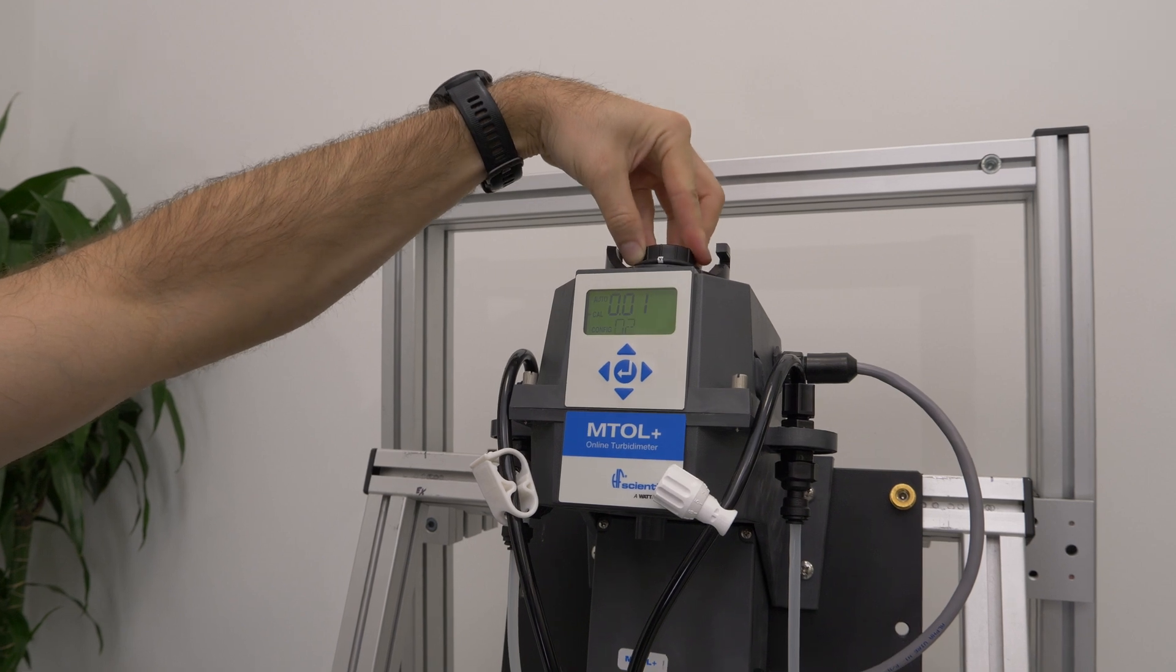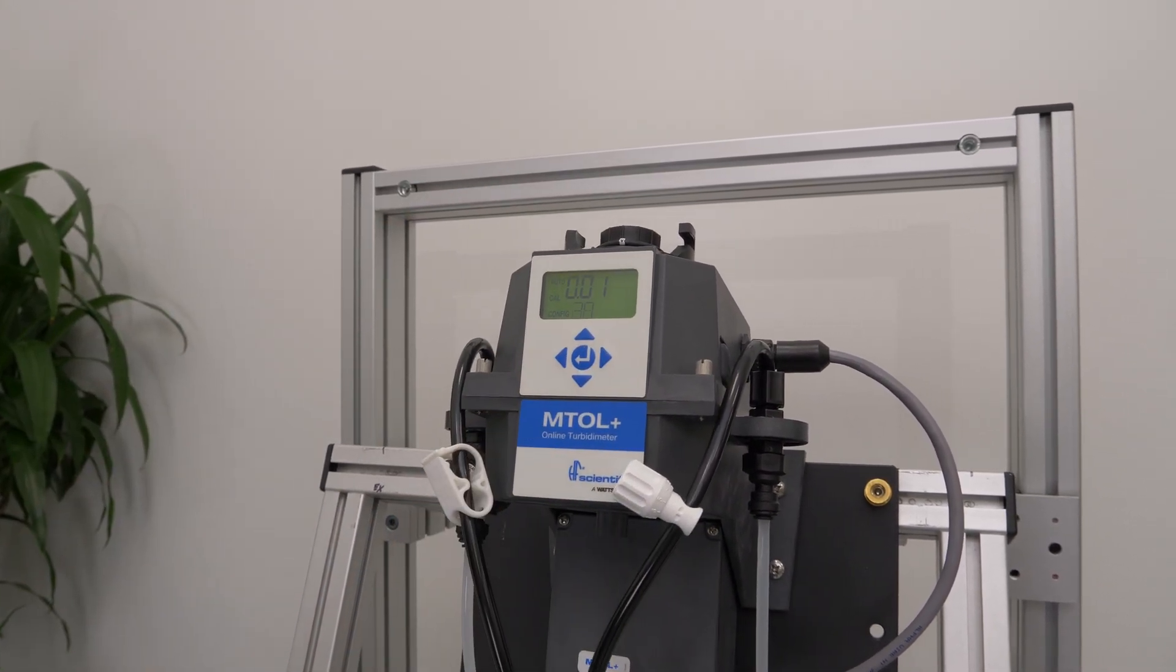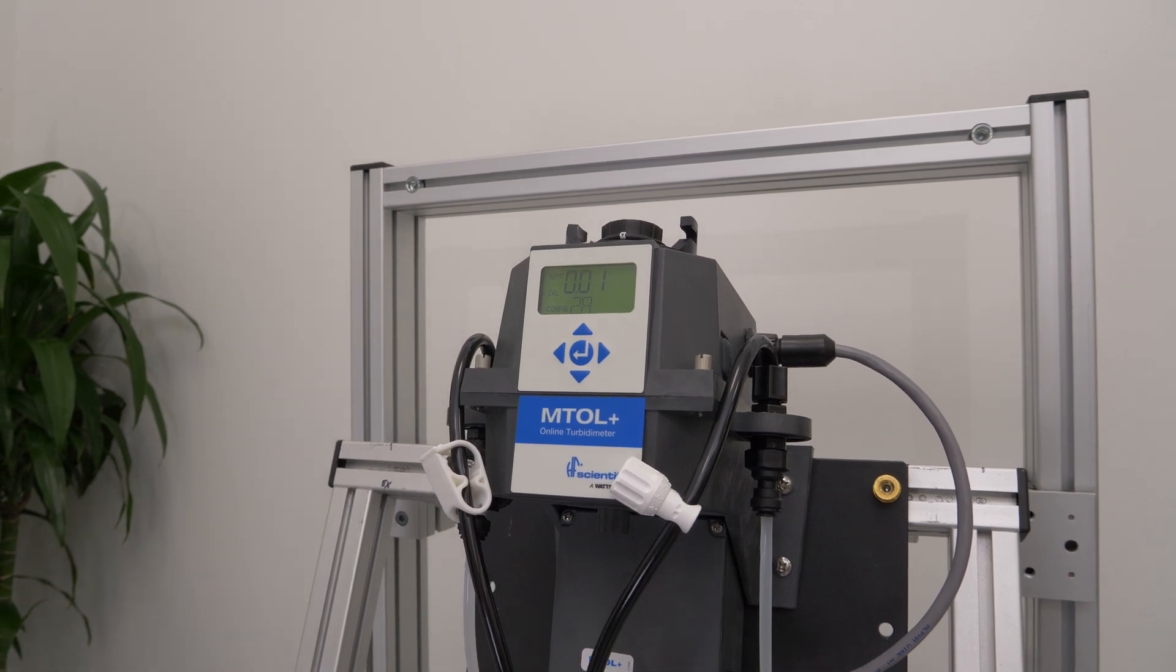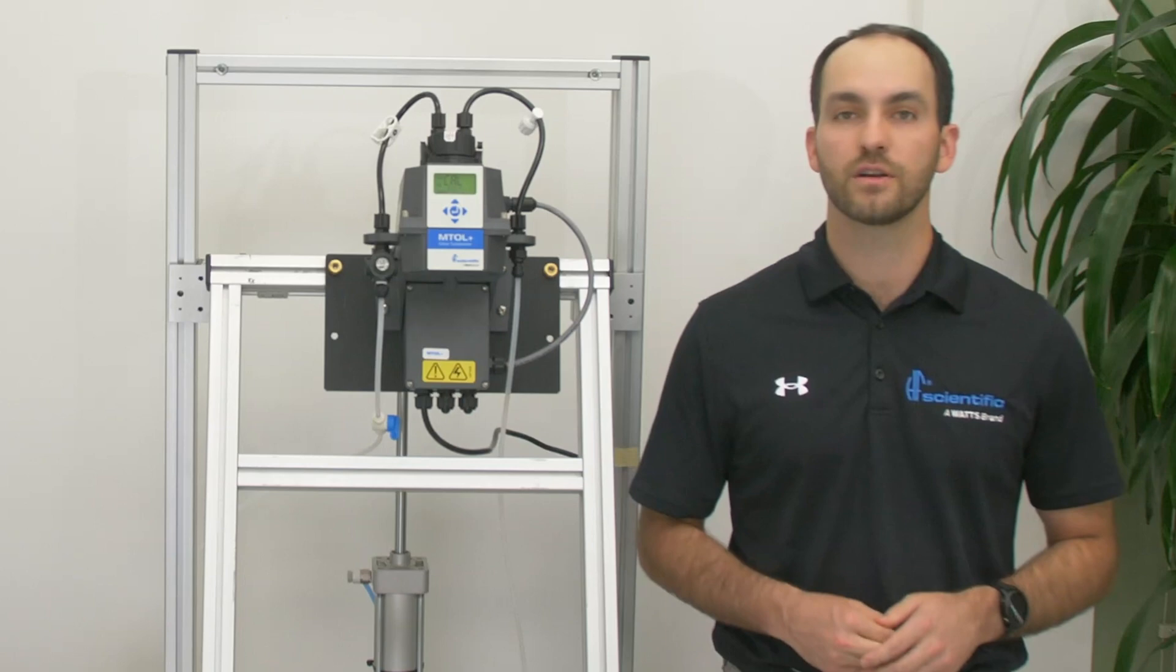As you can see, now it is requesting a 1 NTU standard. I have previously indexed this cell, so I place it into the instrument with the white band lined up to the raised mark on the front of the instrument.